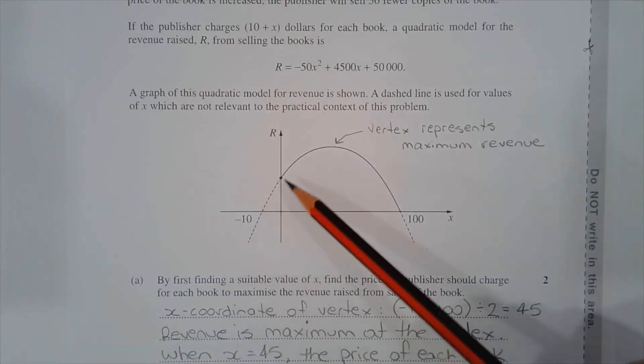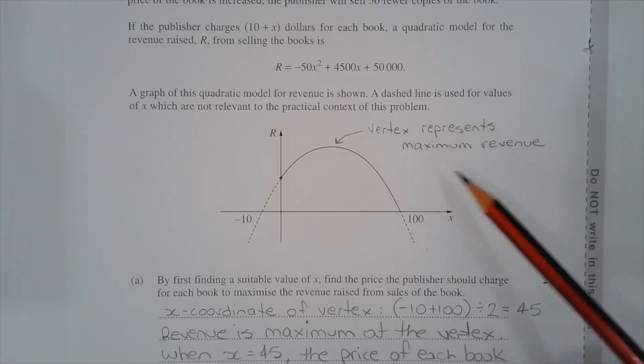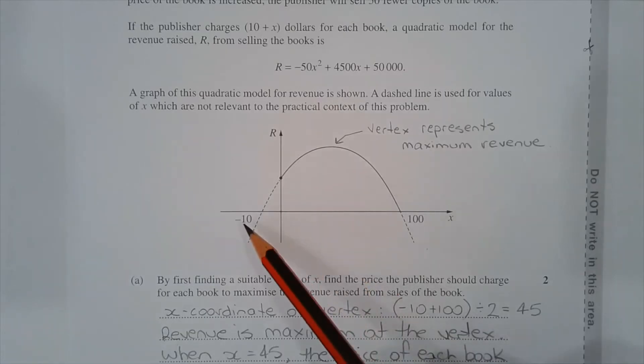This is a concave down parabola where the vertex represents maximum revenue. The X coordinate of the vertex is found by taking the average of the two X intercepts. So the average of negative 10 and 100.